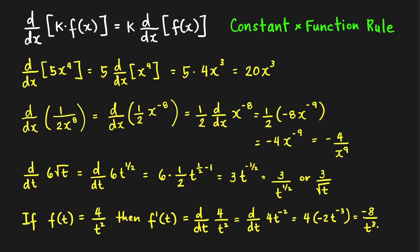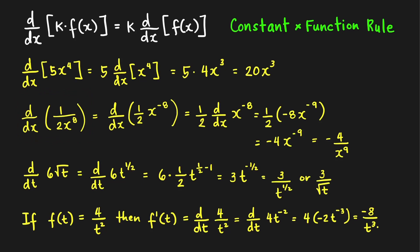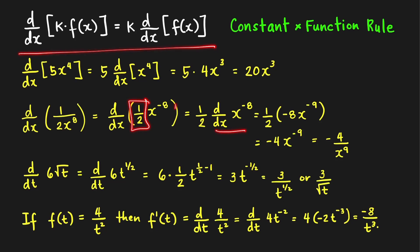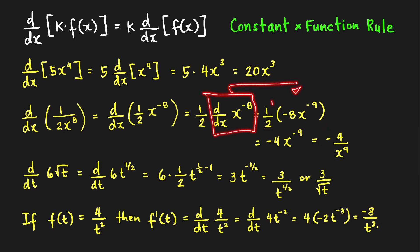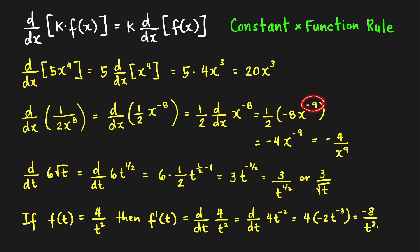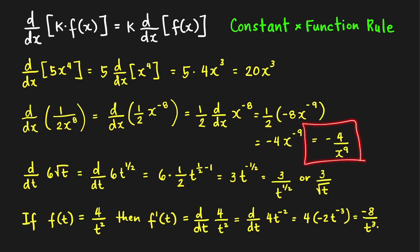Next, the derivative with respect to x of 1 over 2x raised to 8. We write this as 1 half times x raised to negative 8, then apply the constant times function rule: 1 half times the derivative of x raised to negative 8. Applying the power rule, bring down negative 8 and subtract 1, giving negative 8 minus 1 equals negative 9. Multiplying 1 half by negative 8 gives negative 4, so the result is negative 4x raised to negative 9, which simplifies to negative 4 over x raised to 9.